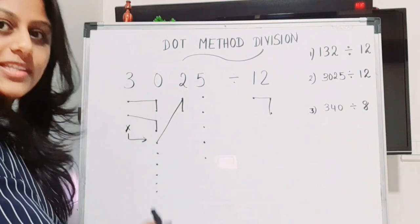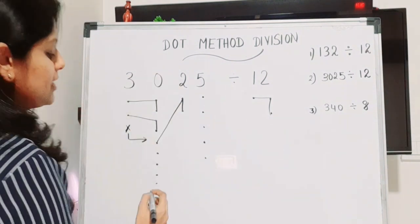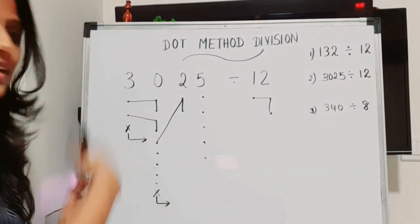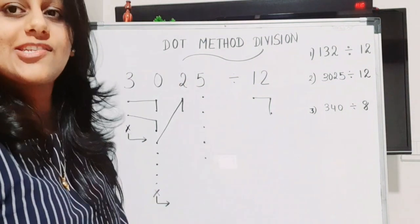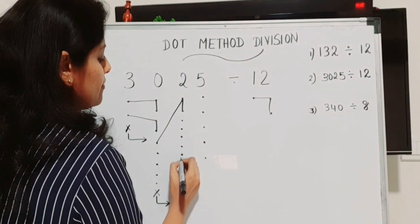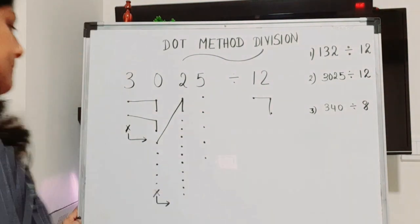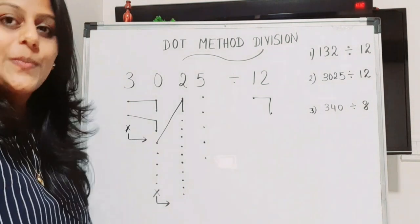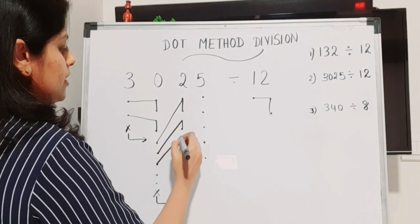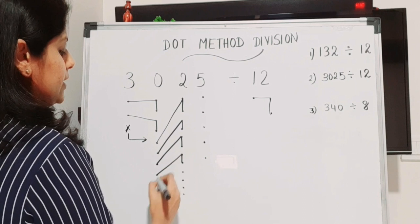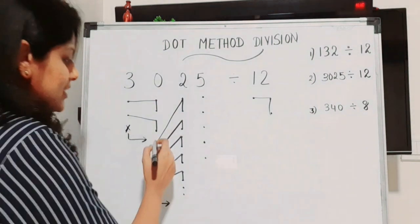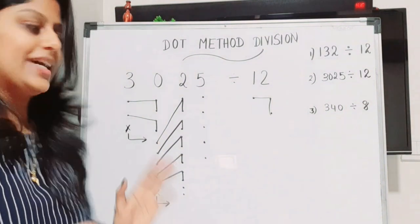Again, we check for one dot in this column and two in the consecutive column, but there are no dots there. So we use the same method: cancel one dot and move it forward, where it becomes 10 dots. We then group one and two repeatedly until this column is also complete.